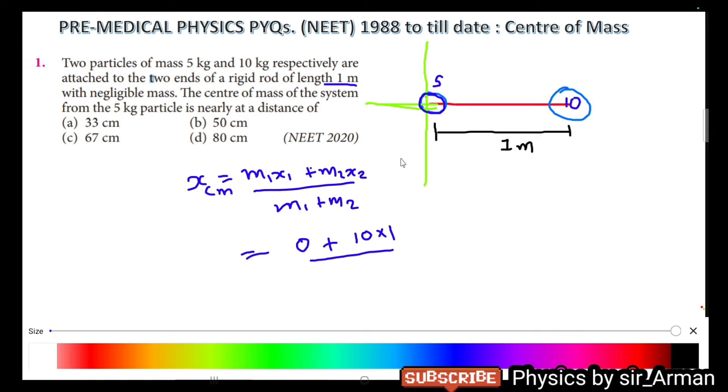So it is 10 by 15, which is 2 by 3, so 2 by 3 is 0.67. Our answer is in meters because we have considered this distance in meters, so it is 67 centimeters. So this is 0.67 meter.